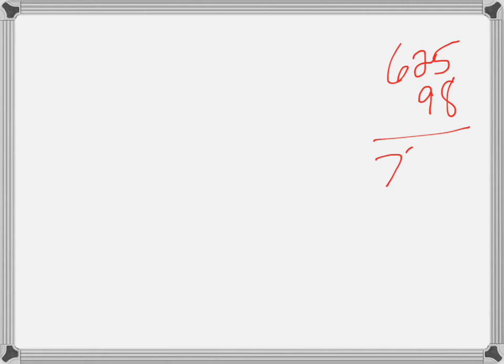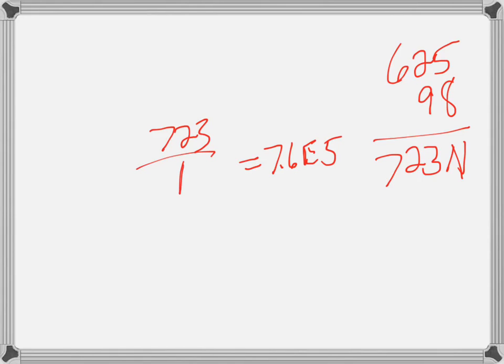Last problem: a person who weighs 625 newtons is riding a 98-newton bike, so 625 plus 98 gives you 723 newtons total. The pressure is 7.6 × 10^5, and the force is 723. We're going to divide that by the area to figure out what the contact area of the bike tires would be. The question asks for the area of contact between each tire and the ground, so you'll take that total area and divide it by 2 to get the area for each bicycle tire.